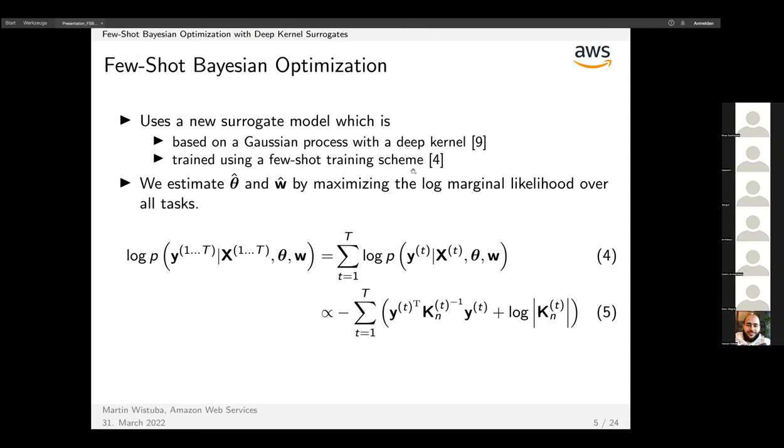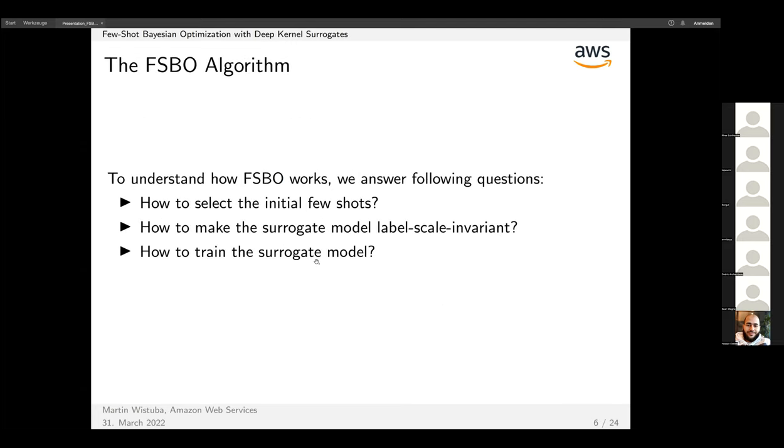Both are things that we didn't come up with in the paper but are from the literature. The objective is to find our kernel parameters by maximizing the log marginal likelihood of all the tasks we have.